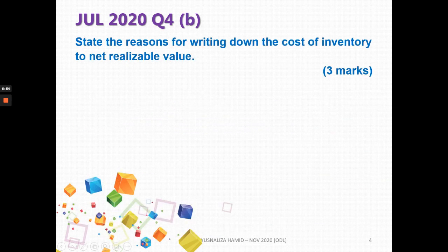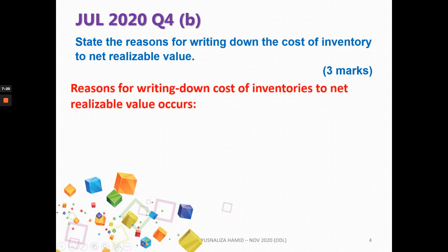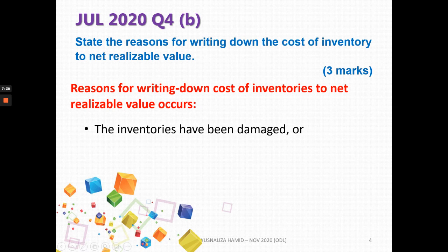Next, you are asked to state the reasons for writing down the cost of inventory to net realizable value — why does the company write down inventories from cost to NRV? The reason is that your inventory as per your records does not reflect the net realizable value. At year end, you do your inventory valuation and find a write-down is needed — normally because inventories have been damaged due to flood, natural disaster, or COVID-19 issues.